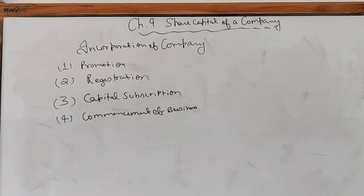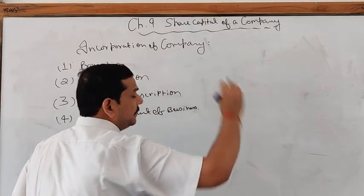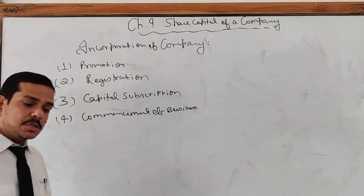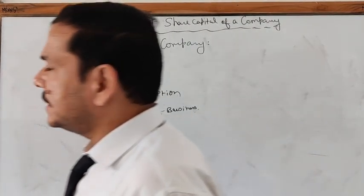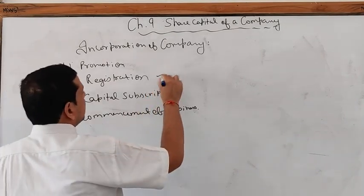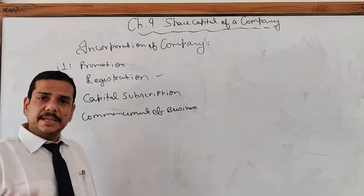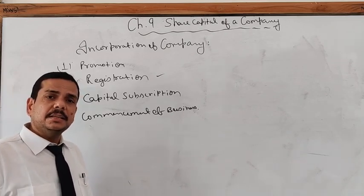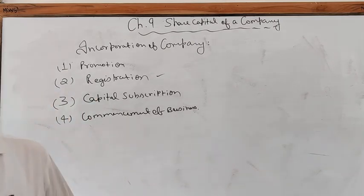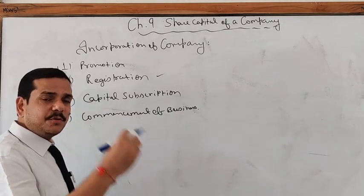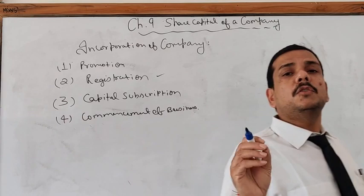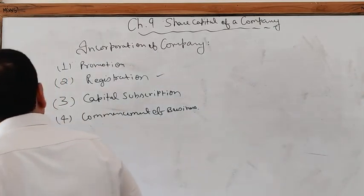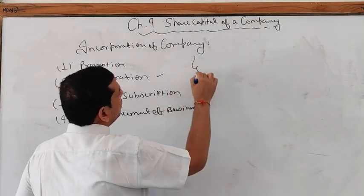The next topic is incorporation of the company — giving a legal recognition to the company. The first stage is promotion: the person or group promoting the company, for example Ratan Tata promoting Nano. The second stage is registration with the Registrar of Companies under the Companies Act 2013, requiring preparation of documents — Articles of Association, Memorandum of Association — and submitting them. After verifying all documents, the Registrar will give a certificate of incorporation. Two stages are required for a private company.